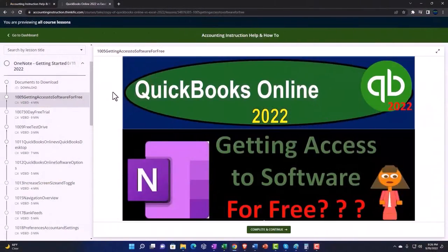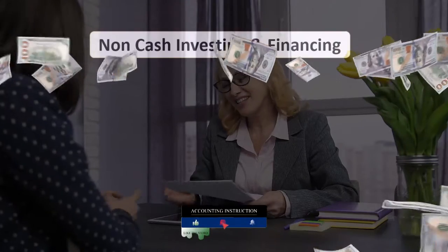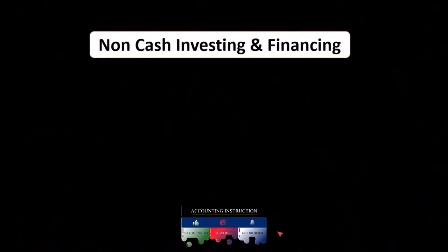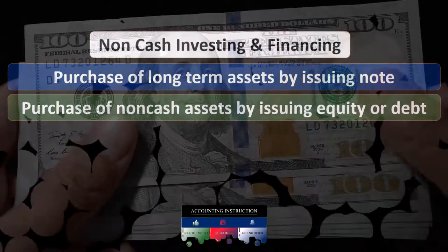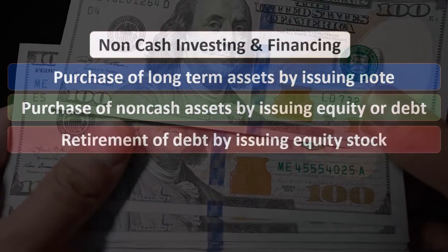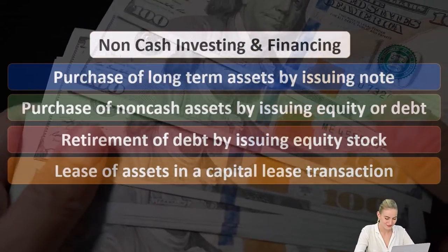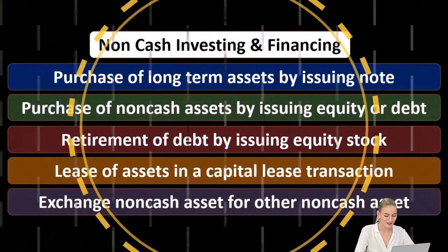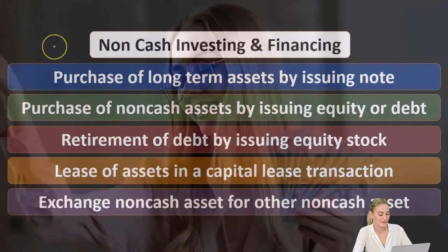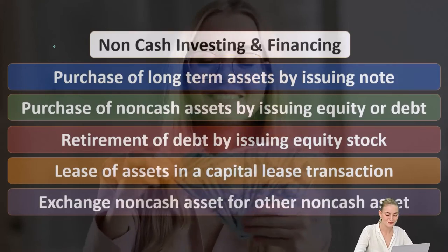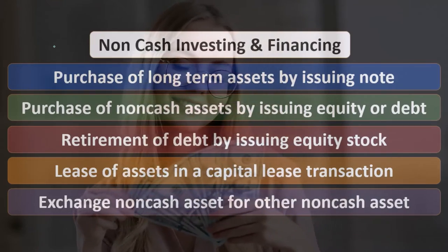We will explain more fully the idea of looking at non-cash items when considering a statement of cash flows. Some examples of non-cash items would be: the purchase of long-term assets by issuing a note, the purchase of non-cash assets by issuing equity or debt, the retirement of debt by issuing equity stock, lease of assets in a capital lease transaction, and exchange of a non-cash asset for another non-cash asset. Consider these examples and note some of the common features — they deal with investing and financing activities — and think through why we might be linking them to a statement of cash flows.